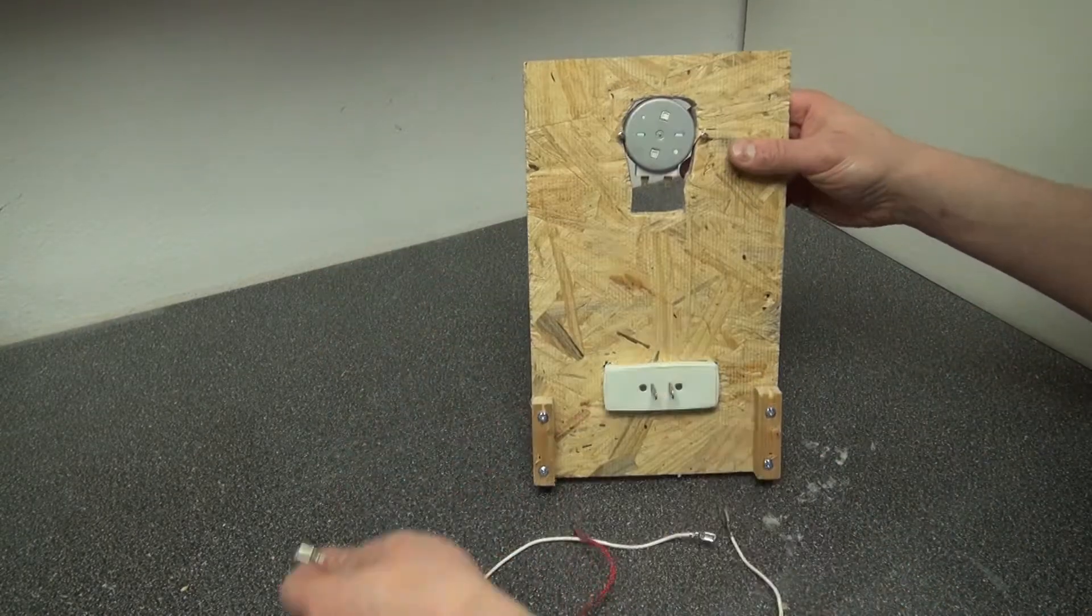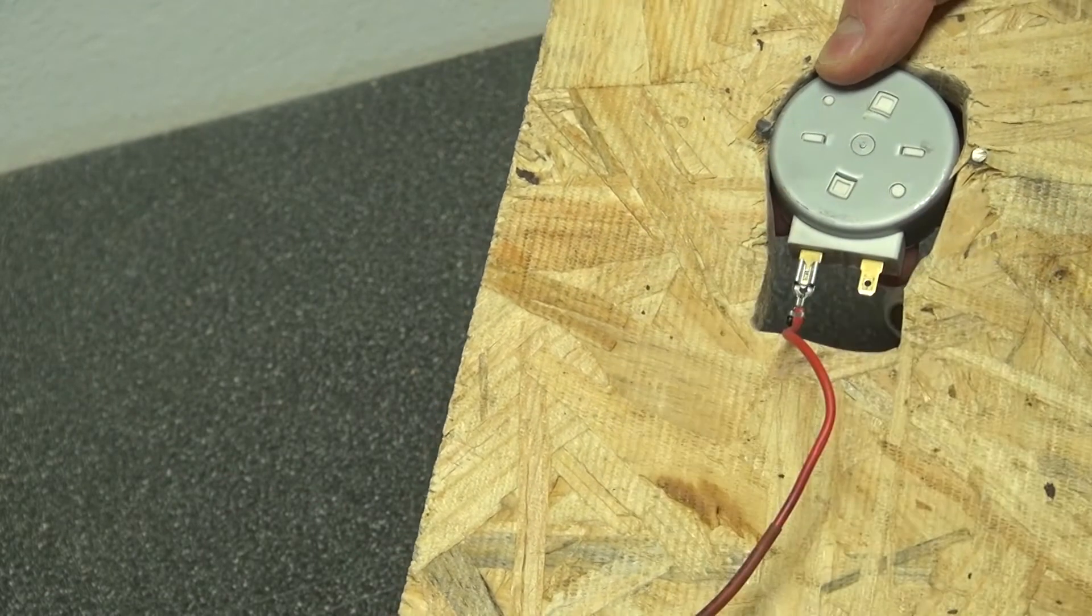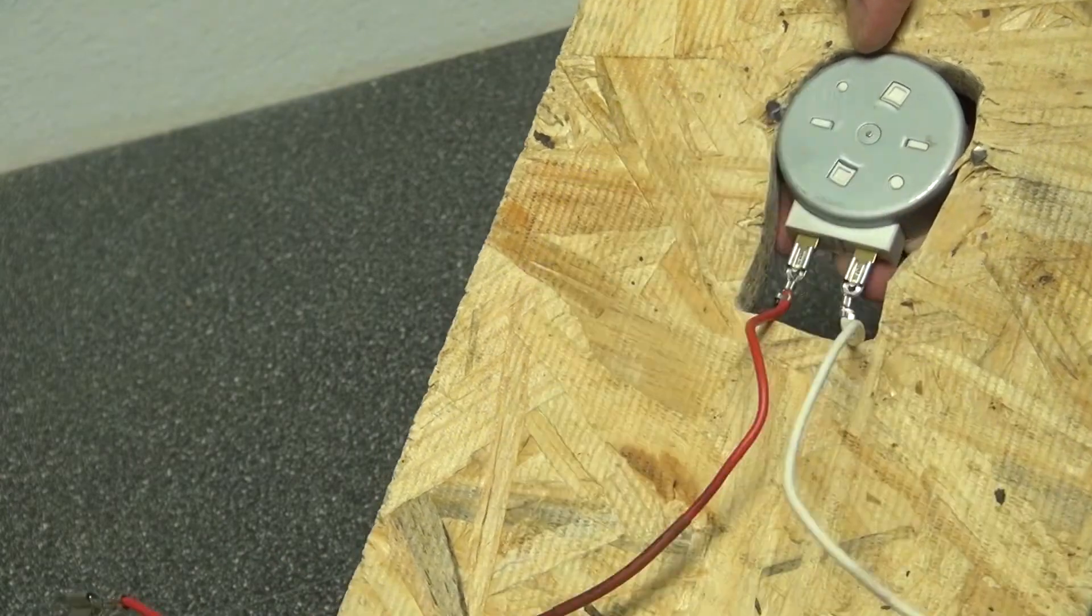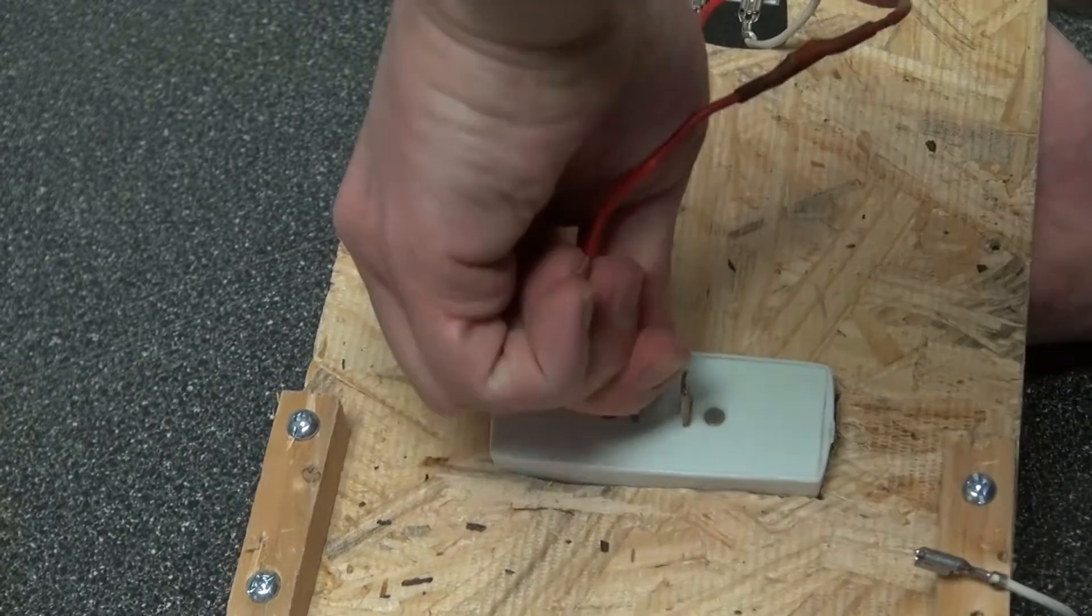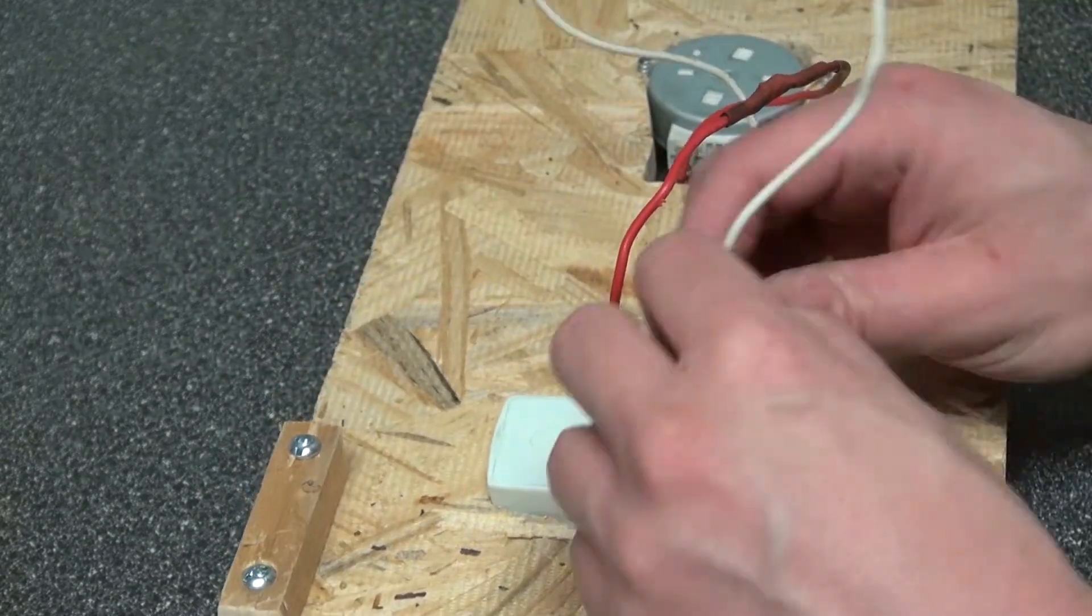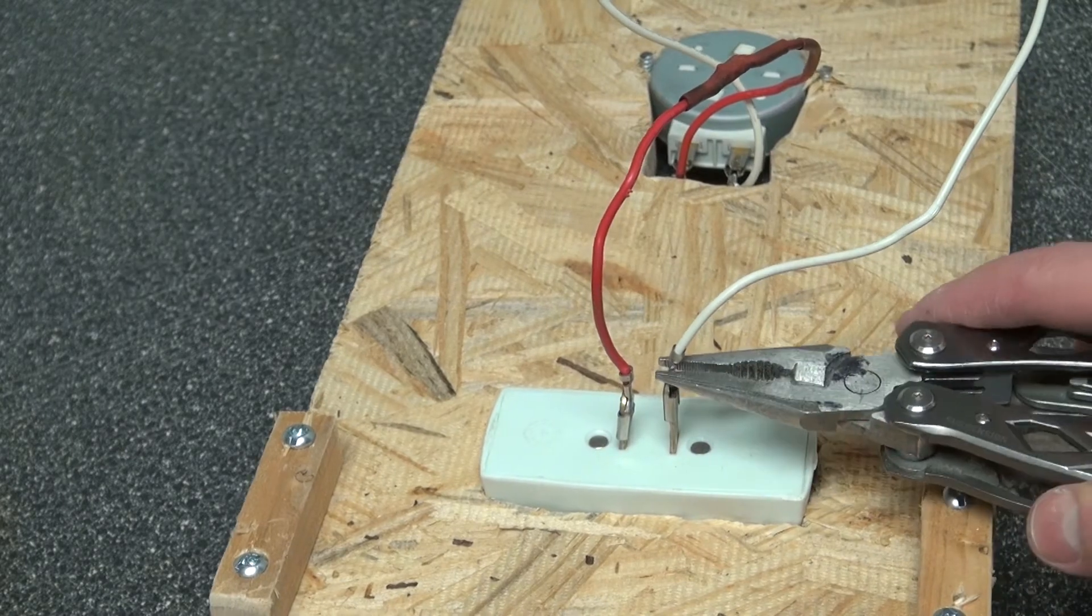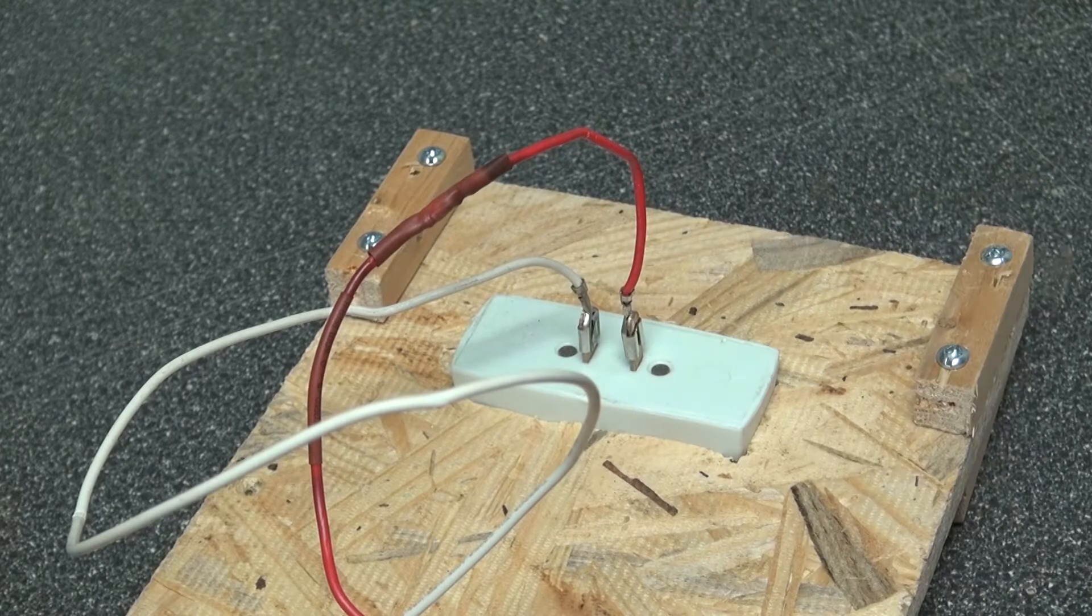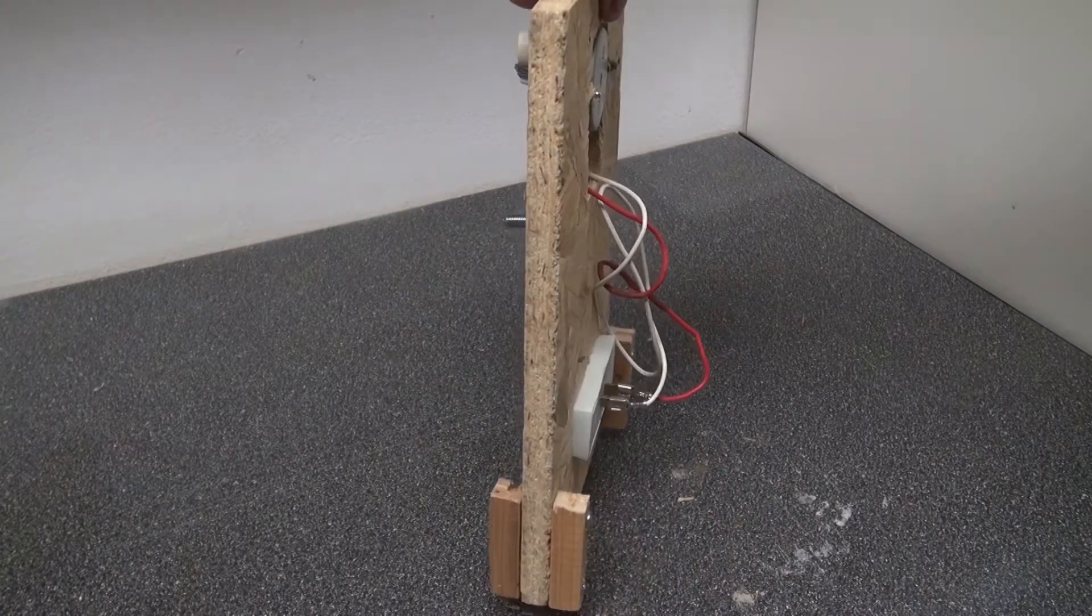Now I have my high voltage wire and I'm going to attach it to the microwave motor and then attach it to the plug outlet. Polarity doesn't matter because it's AC voltage. There we go. Now it is done.